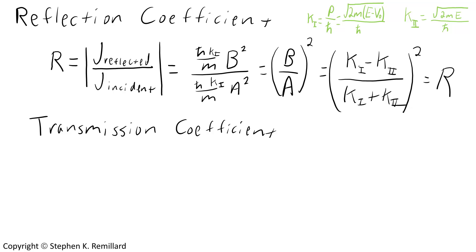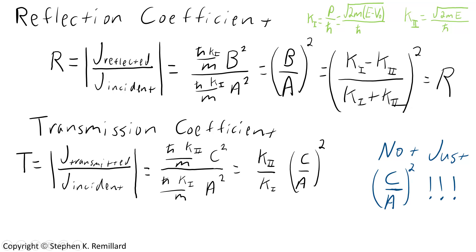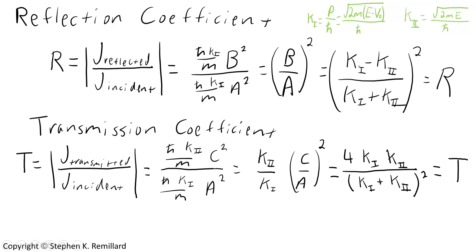Transmission can also be found from an intuitive statement: it is the transmitted probability current density divided by the incident probability current density. The h-bar terms and m's cancel, but you are left with a ratio of k's and a ratio of the coefficients. Importantly, the transmission coefficient is not simply |c/a|², which is a common mistake. You must account for the change in impedance to the wave in the two regions. Using the expression for c in terms of a gives the transmission coefficient as (k2/k1) times |c/a|².